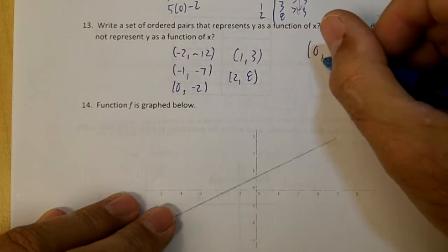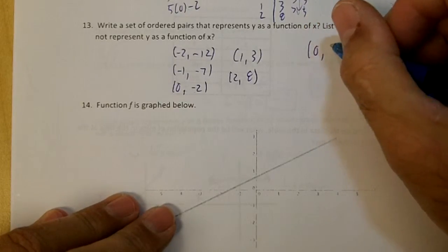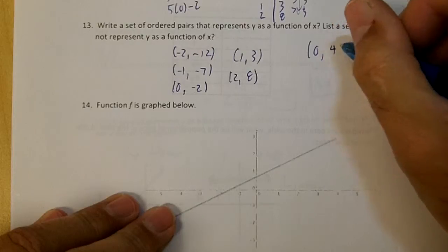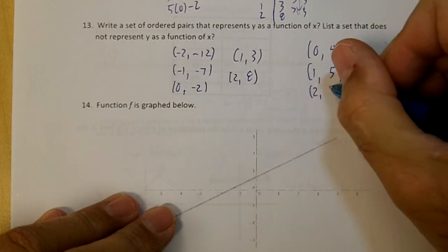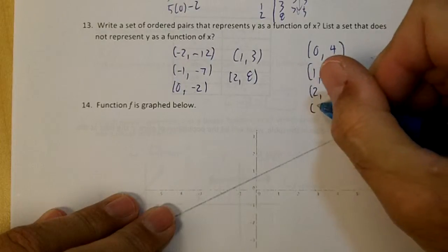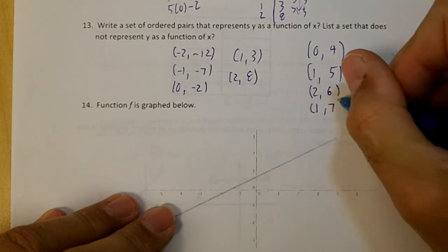This would be an example. You would have 0 comma 4, 1 comma 5, 2 comma 6, and let's do 1 comma 7.